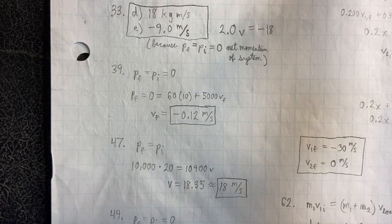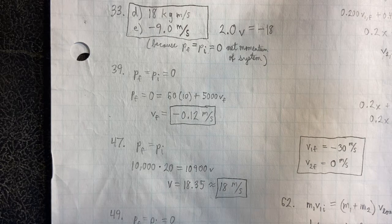Now, if the mass is increased, well, then, of course, the velocity needs to decrease, and that ends up being 18 meters per second.